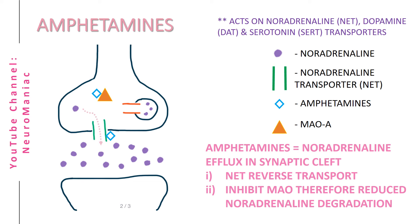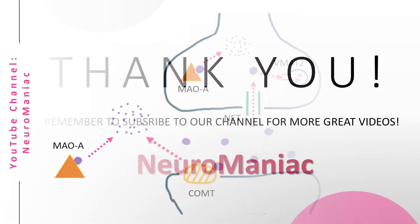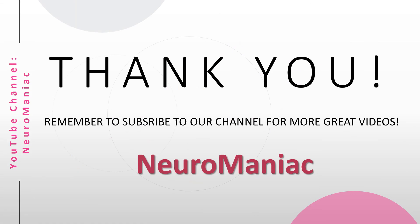Another drug of interest is amphetamine. This drug has two mechanisms of action: it reverses the transport of noradrenaline into the extracellular space, and it inhibits monoamine oxidase. This last slide just sums up the whole process just described, so hit pause and take it all in. That's all for today.